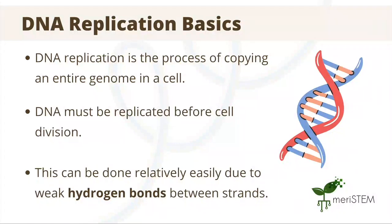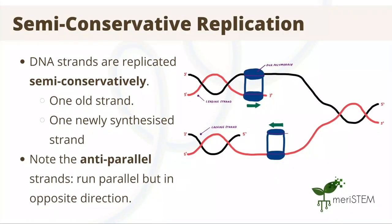DNA replication is the process of copying an entire genome in a cell to produce two exact copies. The entire genome's DNA must be replicated before cell division in order to produce functional daughter cells. This can be done relatively easily due to weak hydrogen bonds between strands that allow them to be separated. So, let's explore the way that DNA is replicated.